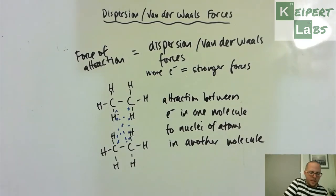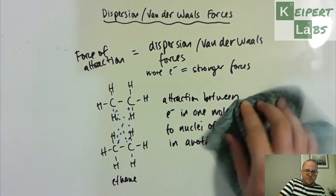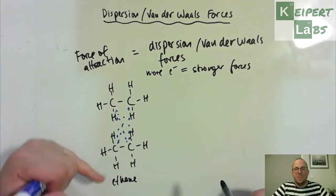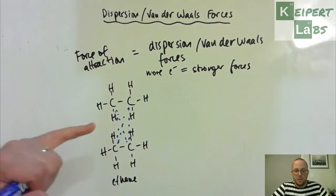This is perhaps a clearer way for us to specify how dispersion forces work. You've got electrons in one molecule being temporarily attracted to the nuclei and atoms in another separate second molecule. This one is ethane, the name for this compound. Because this is a bigger molecule, these attractions are going to be stronger than in hydrogen or fluorine gas.